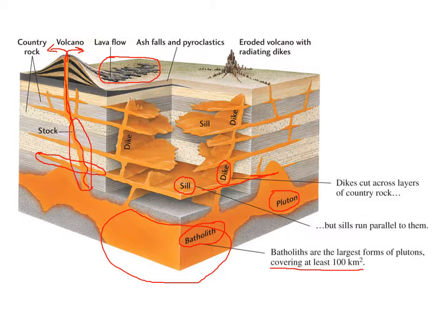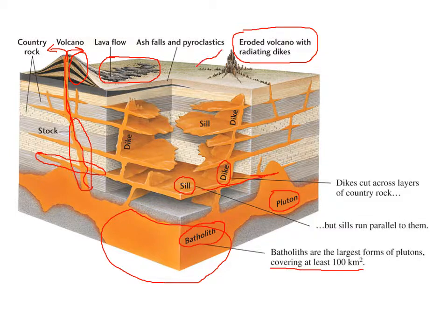Another interesting feature we get is if we erode a volcano. The volcano is made up of layers of ash, lava flow, and pyroclastic material, and that stuff wears away pretty fast. But the magma or lava that cools in place is tough — igneous rock is crystalline, hard, and resistant to weathering. So you often get what's called a volcanic neck with radiating dikes, like the spokes of a wheel.